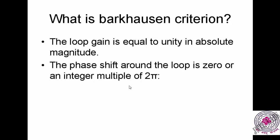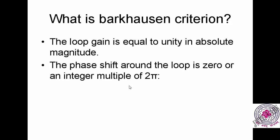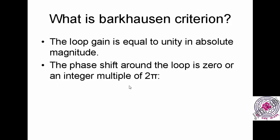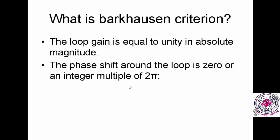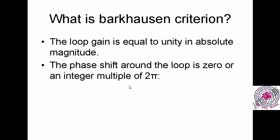Next is Barkhausen criteria. For every oscillator it should satisfy the Barkhausen criteria. This criteria tells two important things: first, the gain of the total circuit should be equal to one — the absolute gain, mod of A, equals one. That is the first criteria. The second criteria is the phase shift around the loop should be equal to zero or integral multiples of 2π. If an oscillator satisfies these two conditions then it is a perfect oscillator, otherwise you will not get perfect oscillations.